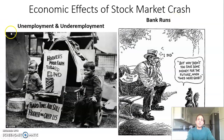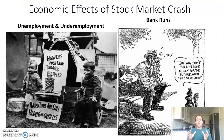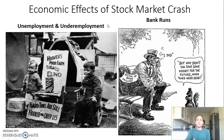One of the first big ways it affects the average American — because the average American really does not have money in the stock market — is through unemployment and underemployment. About 25% of Americans are unemployed once the Great Depression hits its peaks in the early 1930s. You also have massive underemployment where people are working part time, can't find a job that makes ends meet, or are working in a job they're overqualified for — roughly another 25% of Americans.